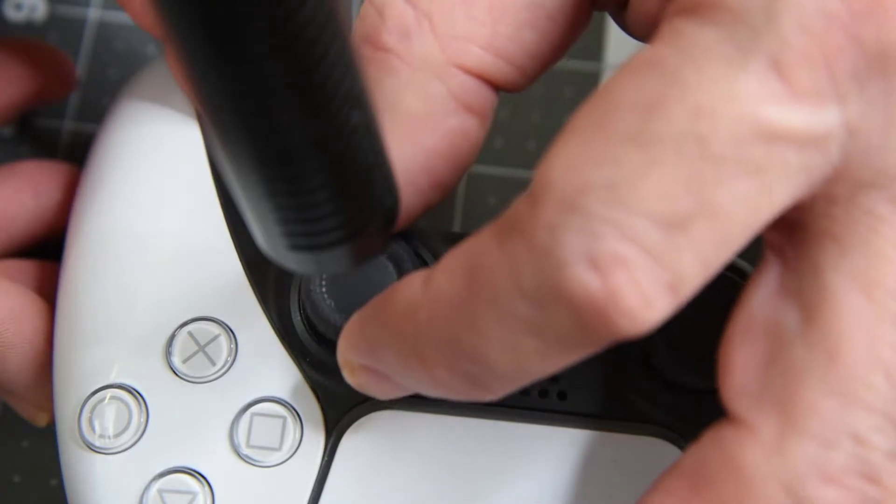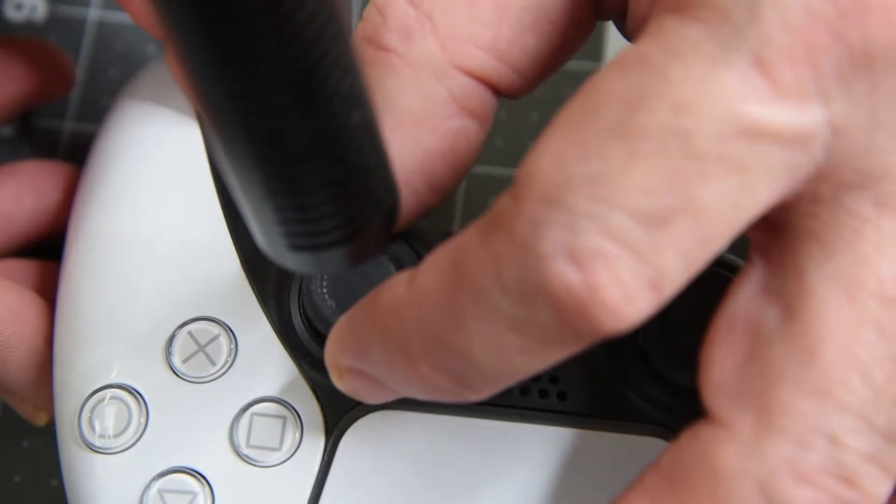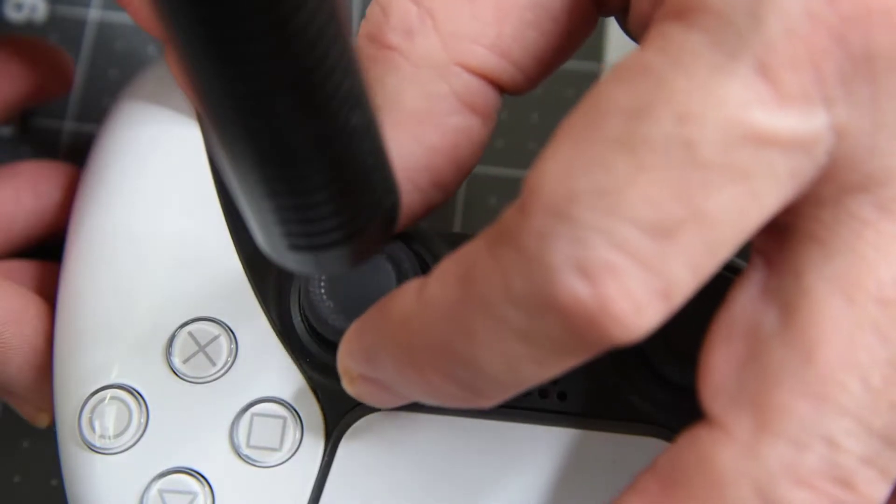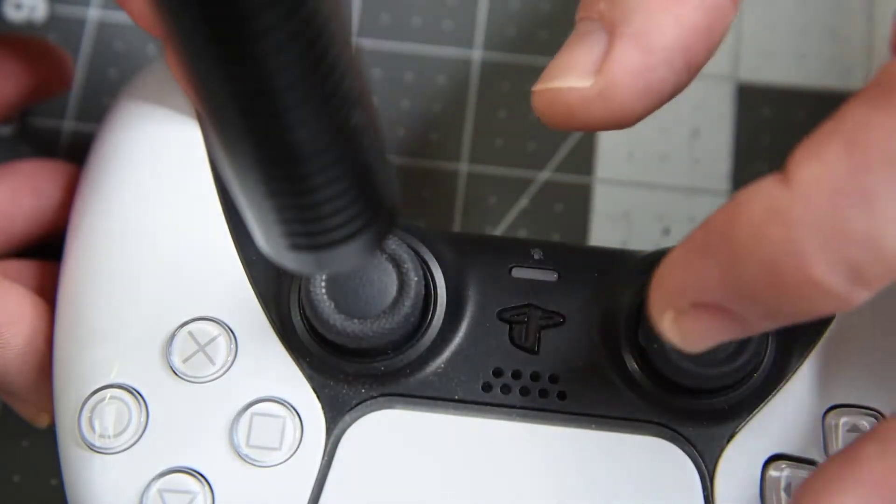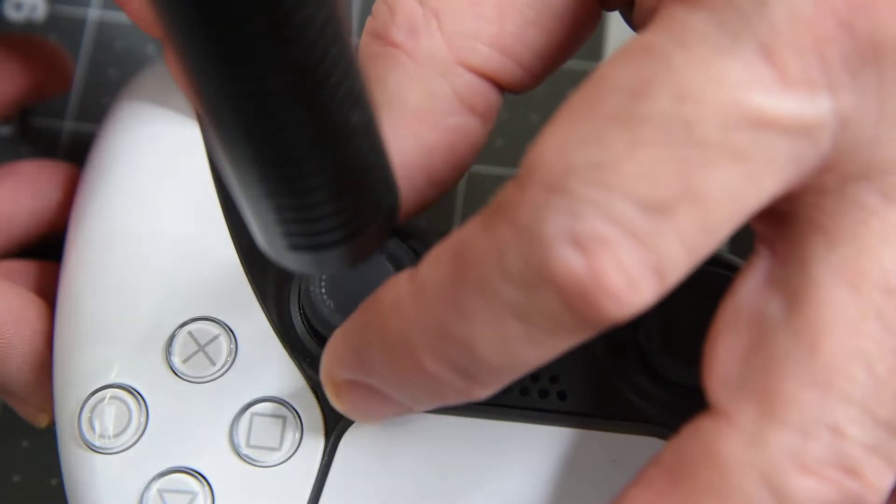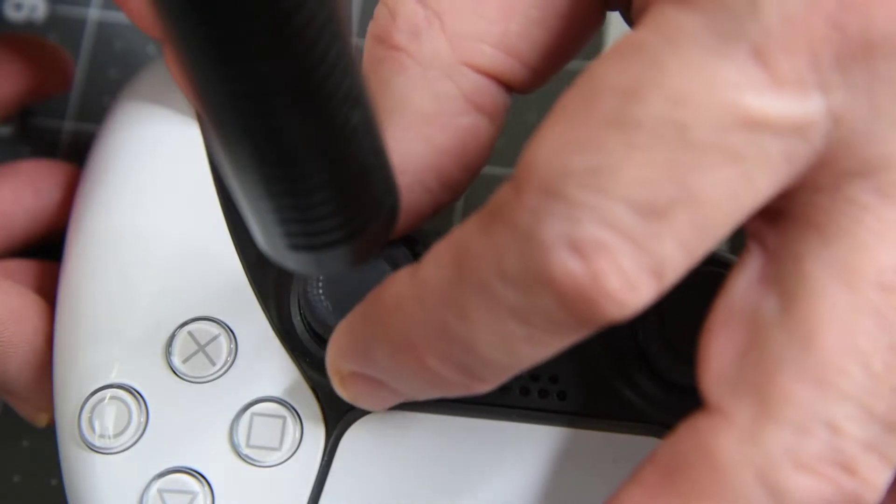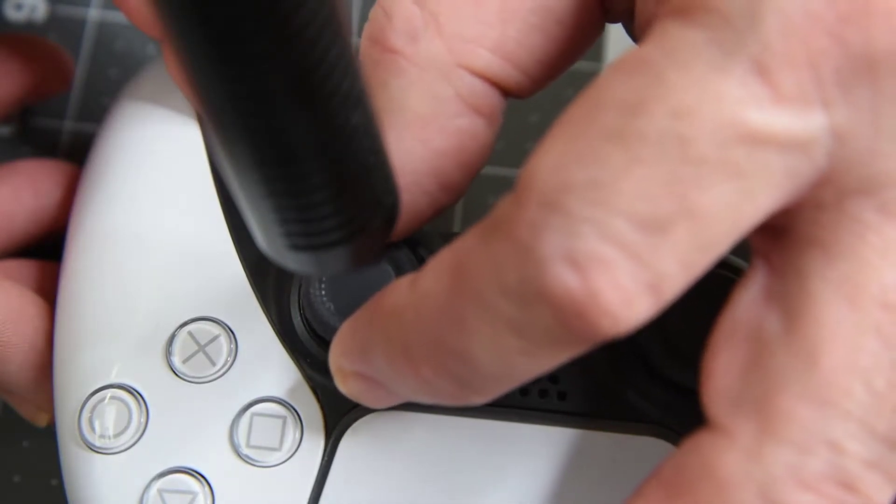I have access to three more DualSense controllers, so I took a look and listened to them. And well, all six of the analog sticks clicked. All original joysticks in them. Obviously, not just one questionable joystick.